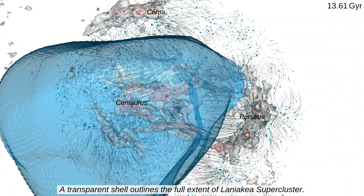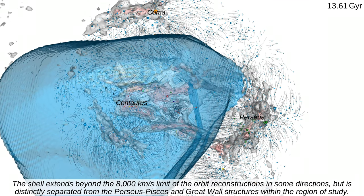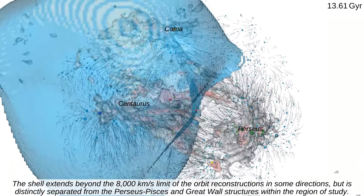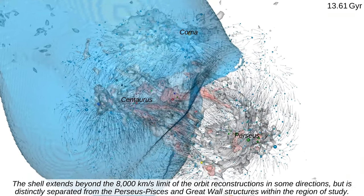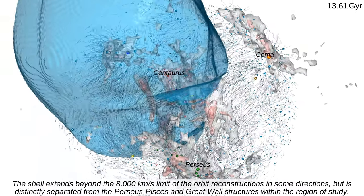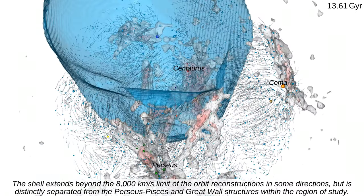The transparent shell outlines the full extent of Laniakea supercluster. The shell extends beyond the 8,000 kilometers per second limit of the orbit reconstructions in some directions, but is distinctly separated from the Perseus-Pisces and Great Wall structures within the region of study.